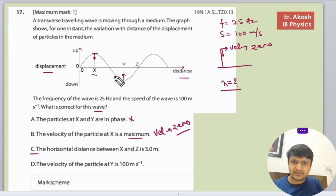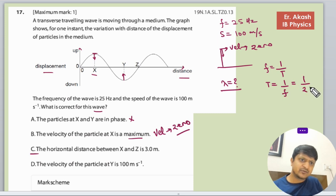f equals one by T, so T equals one by f. And f is given to us, one by 25. So this much seconds is the value of T.